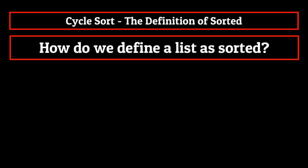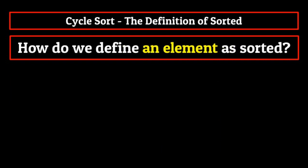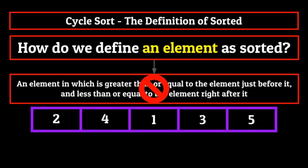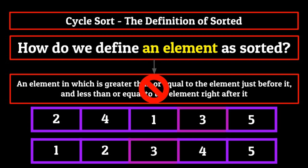So let me follow up with a harder question: how do we define an element as sorted? Now things get a little bit more complicated. You might be tempted to think that the definition doesn't change — that a sorted element is simply one which is greater than or equal to the element before it and less than or equal to the element after it. But that's simply not the case. For example, take the array on your screen now. The element at the third index, three, would be considered sorted since it's greater than or equal to one and less than or equal to five. However, if we pull up the actual sorted list below it, you can see that this is simply not the case.